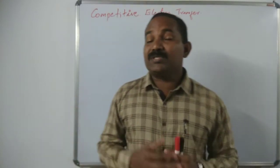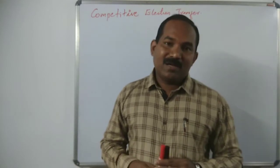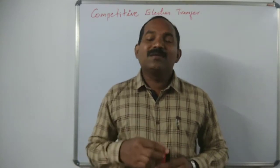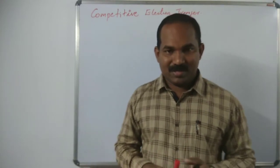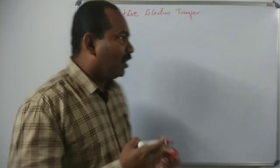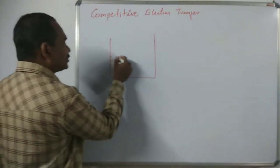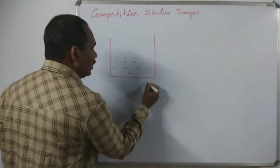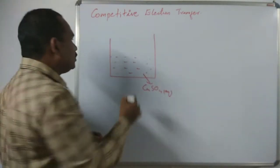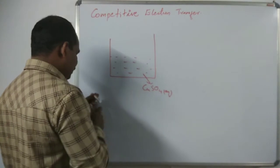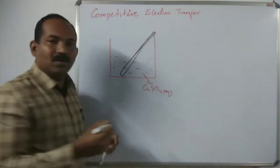First one is competitive electron transfer. To understand this concept, we consider one reaction. When a zinc rod or zinc strip is dipped in copper sulfate solution, zinc is more electro-positive than copper. When we take a glass vessel, copper sulfate aqueous solution is taken, and a zinc rod is placed in this solution.